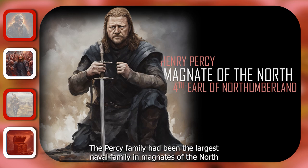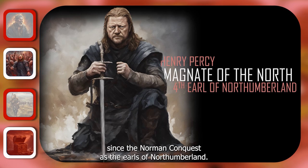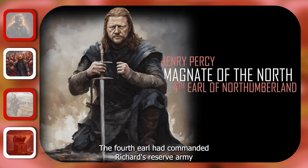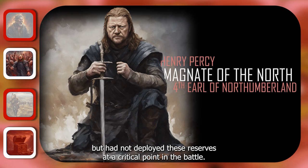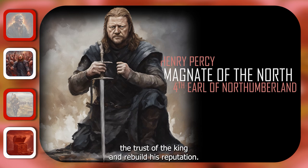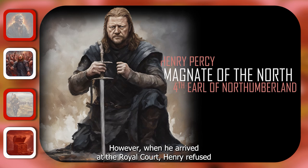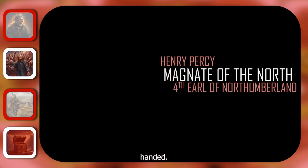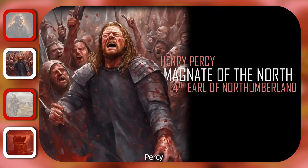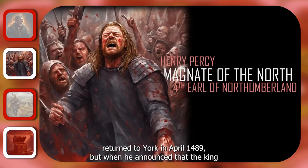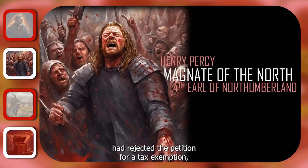The Percy family had been the largest noble family and magnates of the north since the Norman Conquest, as the Earls of Northumberland. The 4th Earl had commanded Richard's Reserve Army during the Battle of Bosworth, but had not deployed these reserves at a critical point in the battle. By 1489, he was looking to gain the trust of the king and rebuild his reputation. However, when he arrived at the royal court, Henry refused to listen to the petition and he had to return north empty-handed. Percy returned to York in April 1489, but when he announced that the king had rejected the petition for a tax exemption, the mob of peasants turned riotous and killed him.